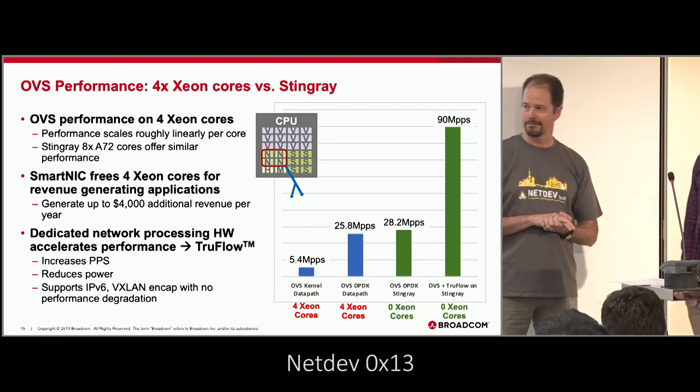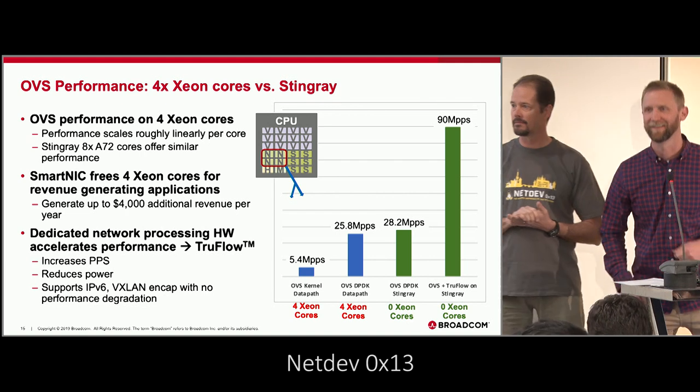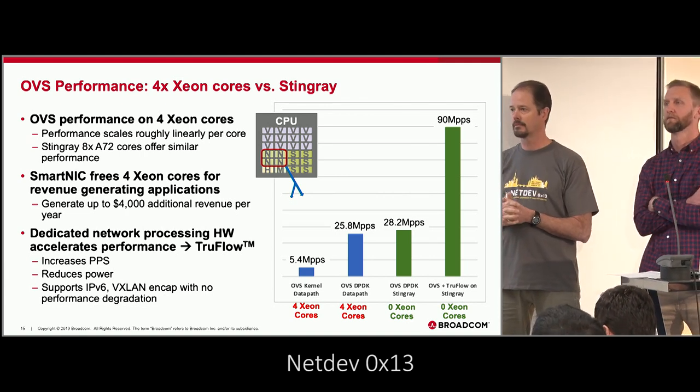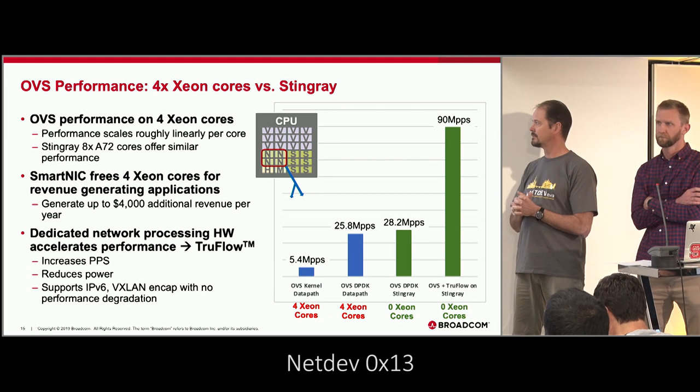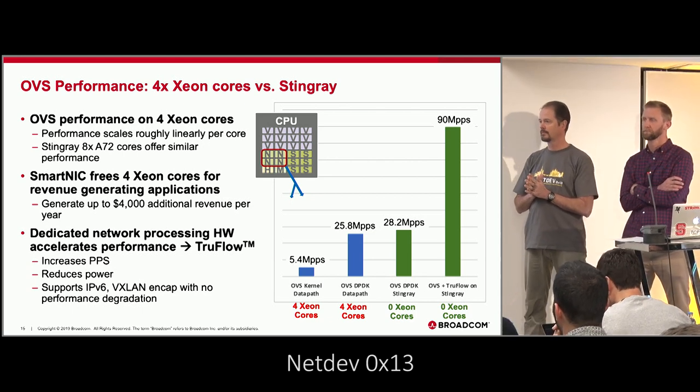An audience member notes confusion: we spent a lot of time saying the control path was the bottleneck, but this slide shows offloading the data path. Does it include misses? This chart is really showing the hit case. The miss case is a problem, and it's the same problem wherever you run it — that's a cost of doing business you can't fix based on where you place the control plane, unless you dramatically improve that control plane.